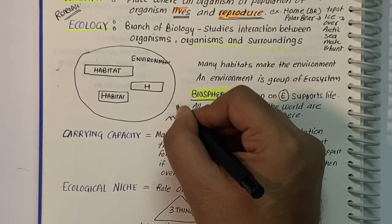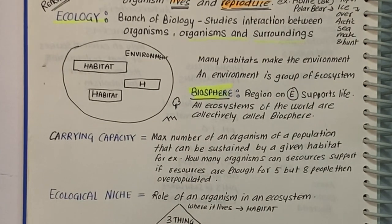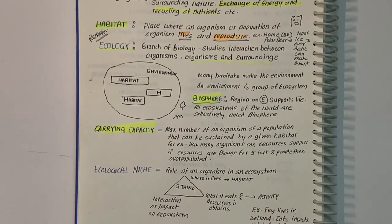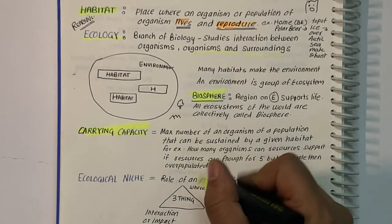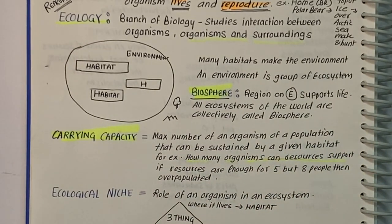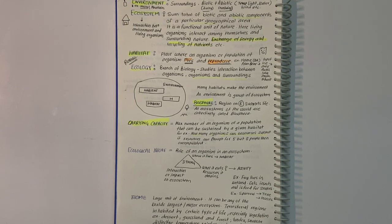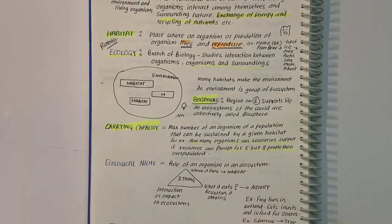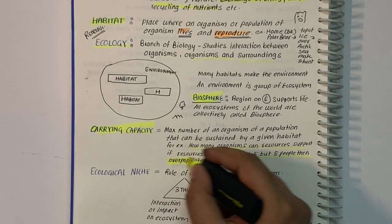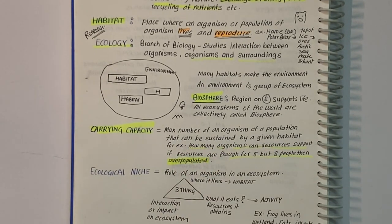Since life exists on the ground, in the air, and in the water, the biosphere overlaps all these spheres. The next term is carrying capacity — the maximum number of organisms of a population that can be sustained by a given habitat. If resources are enough for 5 but there are 8 people, the habitat is overpopulated and beyond its carrying capacity.